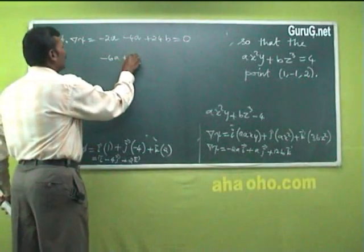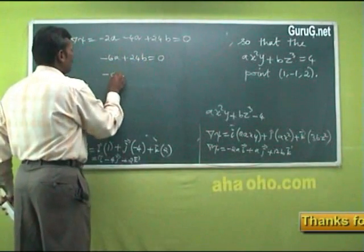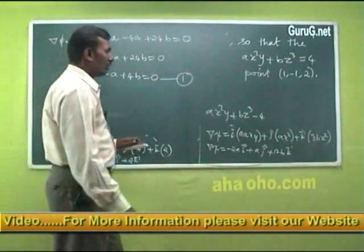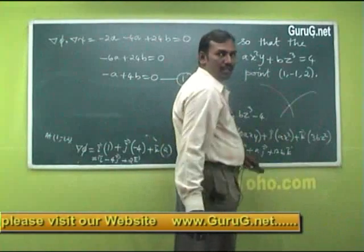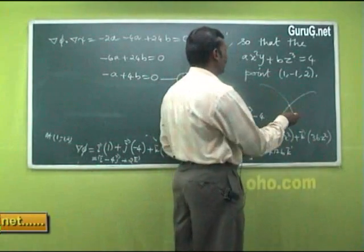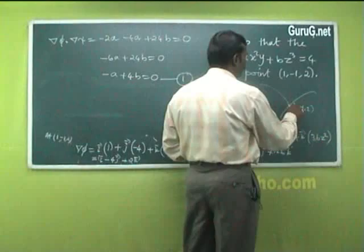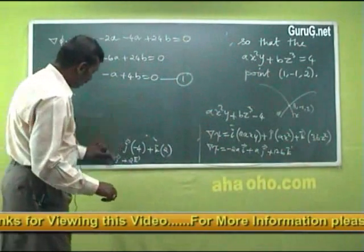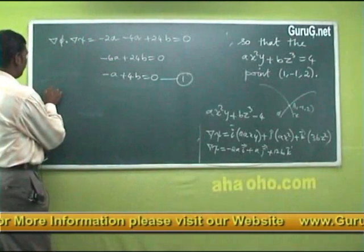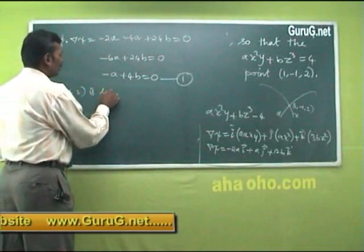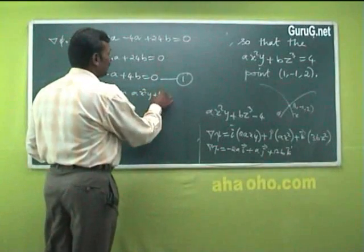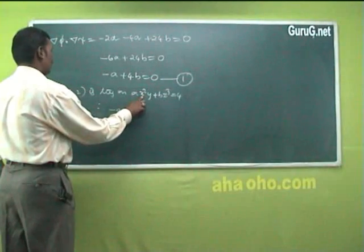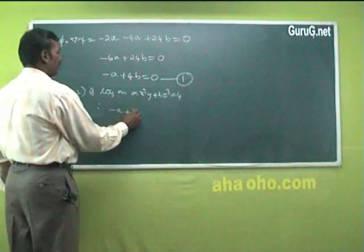Simplifying: −A + 4B = 0. Call this equation 1. Since the point (1, −1, 2) lies on both surfaces and also on ψ: Ax²y + Bz³ = 4, substituting gives A(1)²(−1) + B(2)³ = 4, so −A + 8B = 4. Call this equation 2.